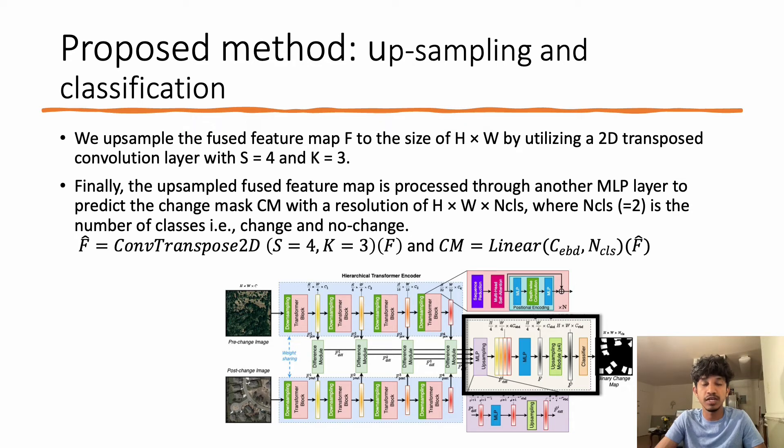We upsample the fused feature map F to the size of H × W by utilizing a 2D transpose convolutional layer with stride of 4 and kernel size of 3. Finally, the upsampled fused feature map is processed through another MLP layer to predict the change mask with the resolution of H × W × N_classes, where N_class is the number of classes, equal to 2 in our case, denoting the change and no-change classes.